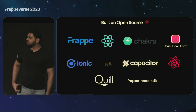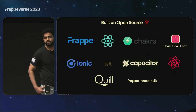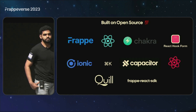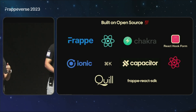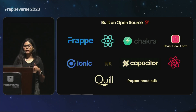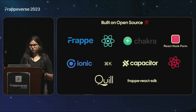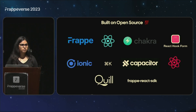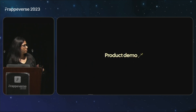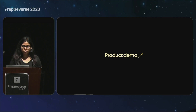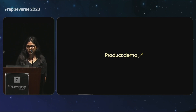Raven is built completely on open source. We are using Frappe and React, and also Ionic and Capacitor for our mobile application. Anyway, so much talk about Raven — let's just see it in action.